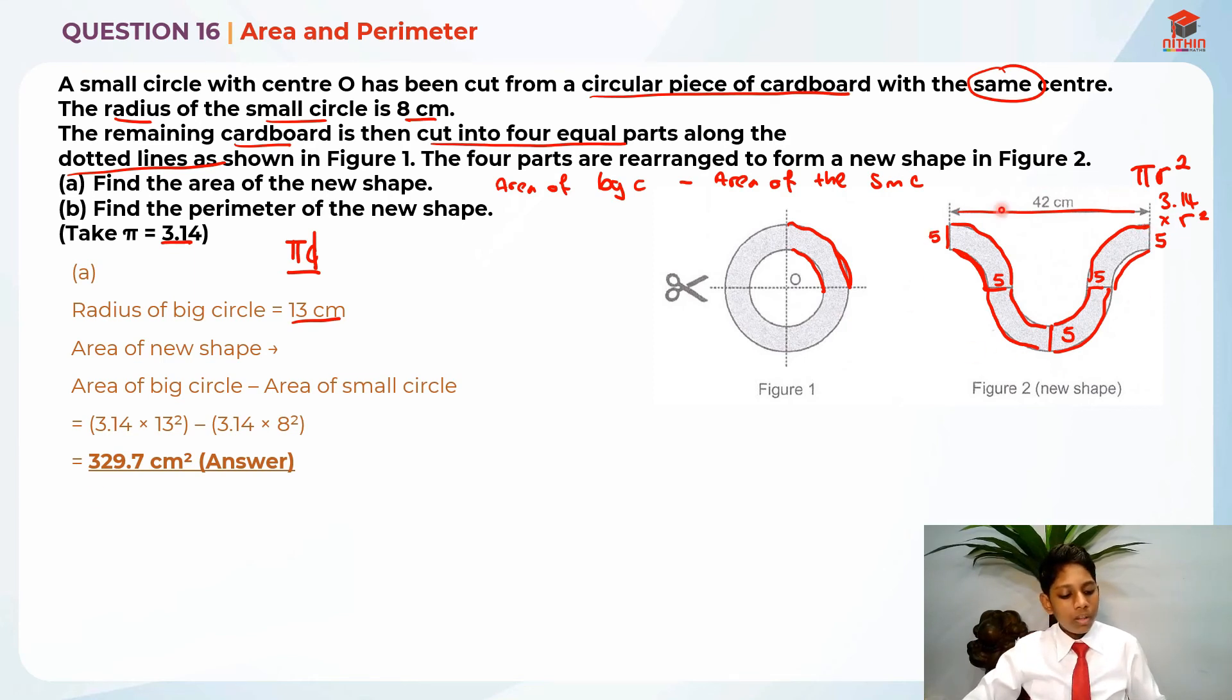So the perimeter is basically four big arcs and four small arcs plus five cm, which is basically 10 cm. So basically is circumference of big circle and circumference of small circle plus 10 cm. So in order to find the perimeter of the new shape, we just need to find four big arcs plus four small arcs plus five plus five.